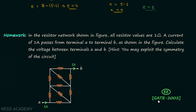The homework problem is taken from GATE 2002 Electrical paper. You are required to find the voltage between terminal A and terminal B, i.e., VAB. A current of 1 ampere is entering and 1 ampere is leaving. All resistor values are equal to 1 ohm. There is one hint: you may exploit the symmetry of the circuit. Try to solve it and post your answer in the comment section. See you in the next lecture.